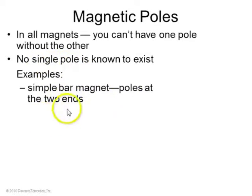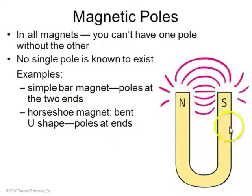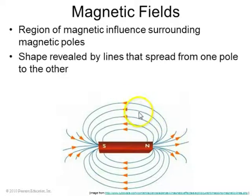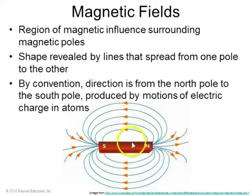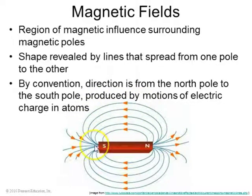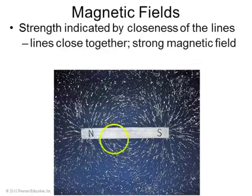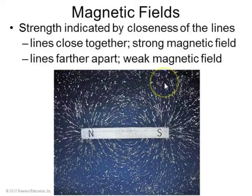A bar magnet has poles at either end. If you have a horseshoe magnet in a U shape, you have one N side and one S side as well. The magnetic field is the region of magnetic influence surrounding the magnetic poles. By convention, the direction of the magnetic field goes away from the north poles and then towards the south poles of bar magnets. The strength of the magnetic field is stronger where the field lines are closer together and weaker where the lines are further apart.